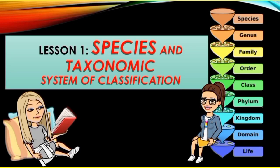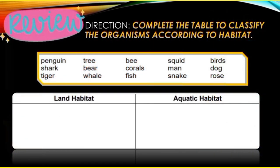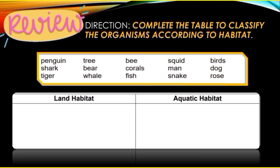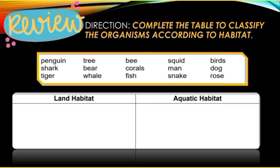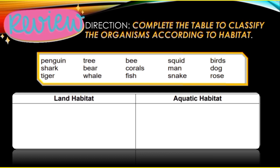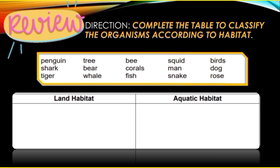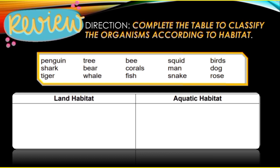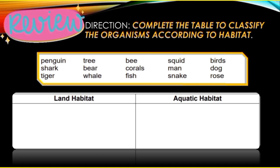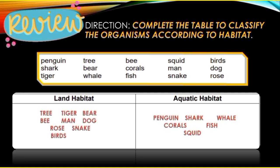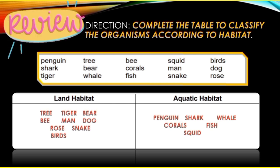Our lesson will be about species and the taxonomic system of classification. Before we start with the discussion, here is a short activity in which you are going to complete the table by putting the organisms into their correct habitat. Pause this video and then come back once you're done to check the correct answers.